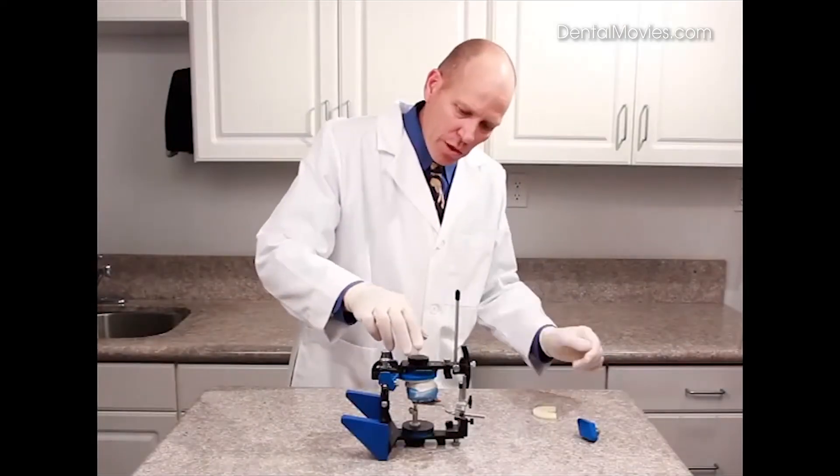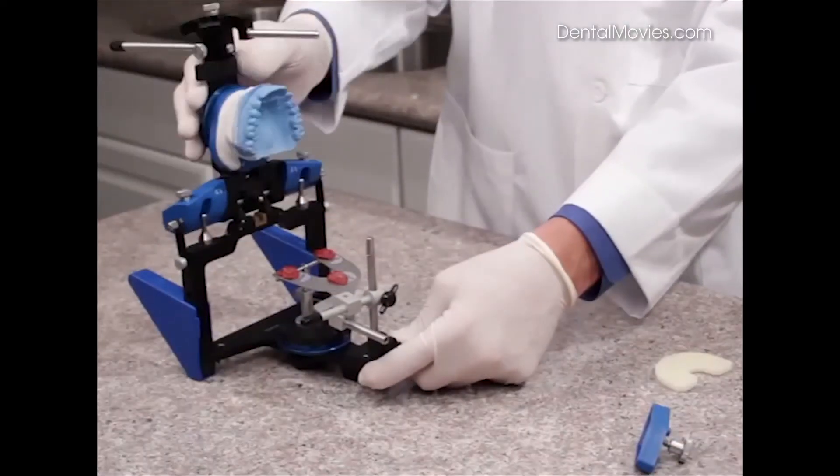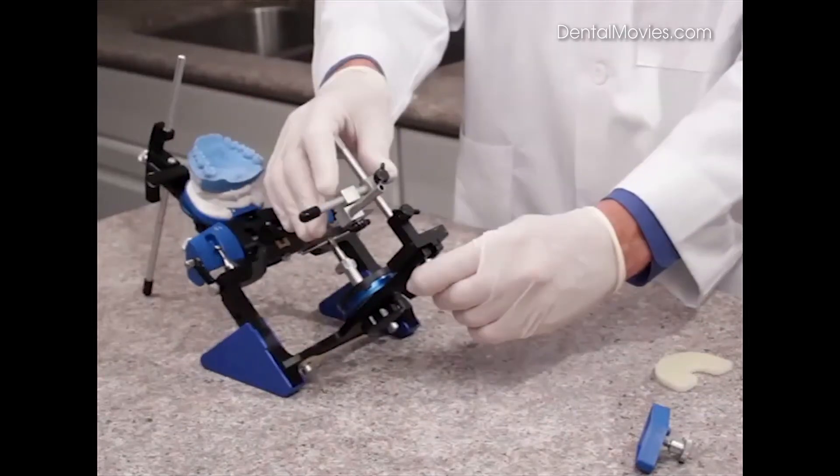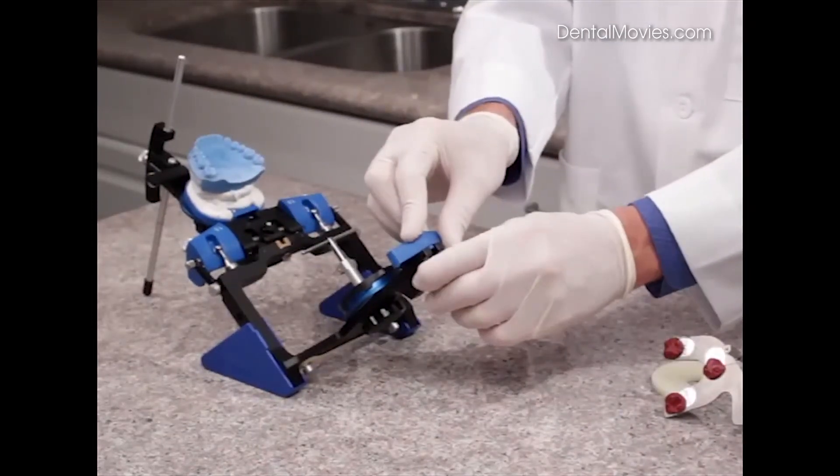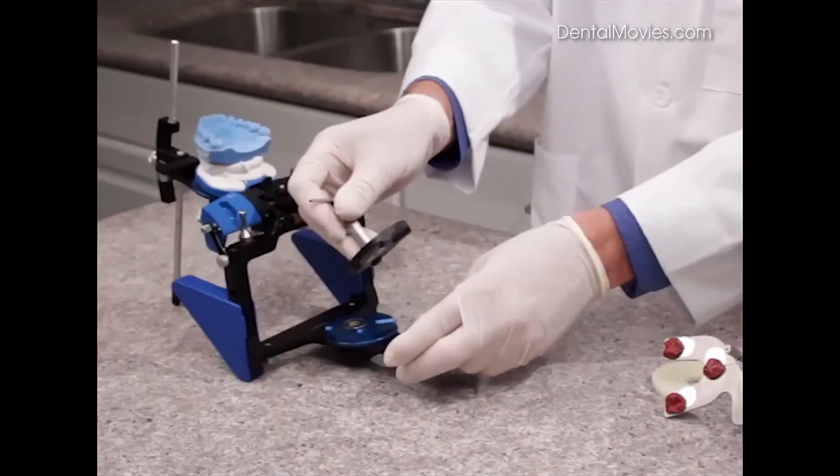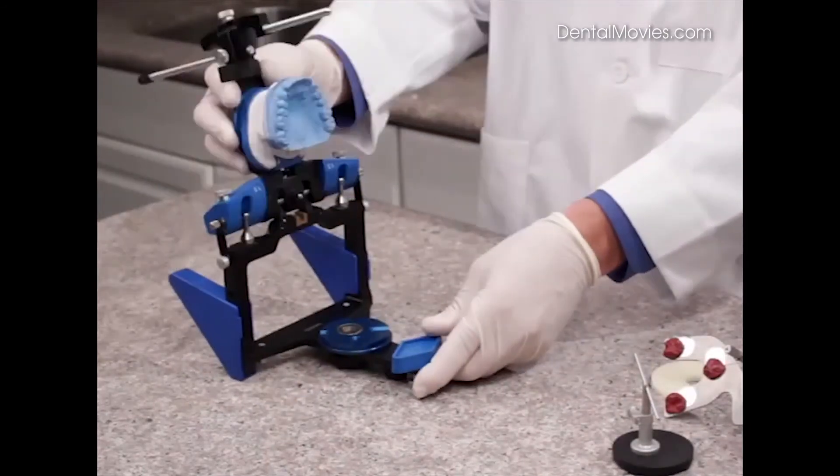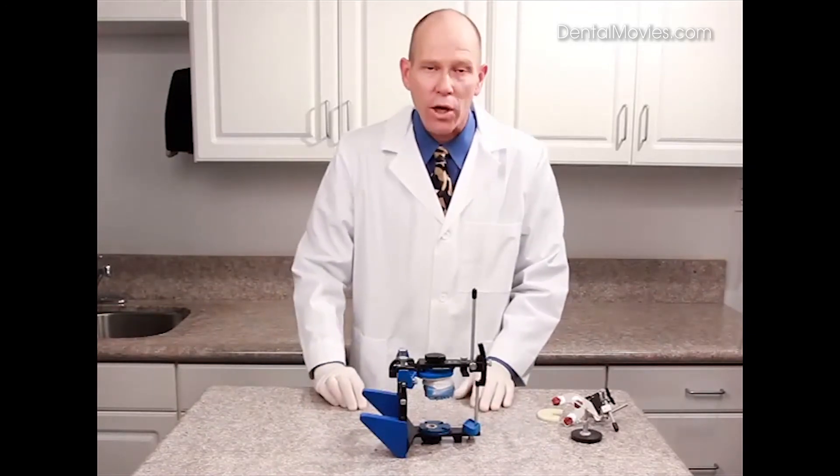The plaster is now set, so we can swing this open, and then we can remove the bifork assembly with the mounting fixture and replace the incisal table, and then remove the bifork support system. We can now prepare for mounting the lower cast at this time.